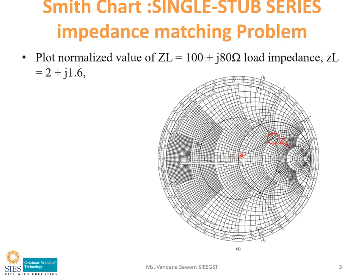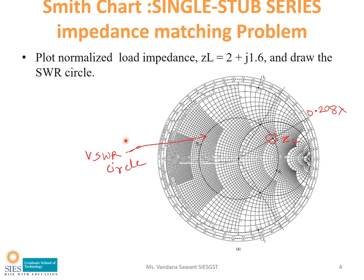After plotting ZL, draw a line passing from the center through ZL and out of the graph. Then take the distance from the center to ZL in a compass and draw the circle passing from ZL — this circle is called the VSWR circle. Since this is a series stub, we need to design with respect to ZL. If it were a shunt stub, we would design with respect to YL. So we will find the wavelength at point ZL.